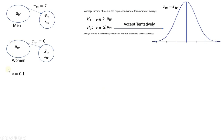Sometimes the average income of women would be more than men. But if you think about the distribution of the difference between the average income of men in a sample and the average income of women in a sample, because we don't know the standard deviation of these two populations, we cannot use the normal distribution. Therefore, we have to switch to the T distribution.